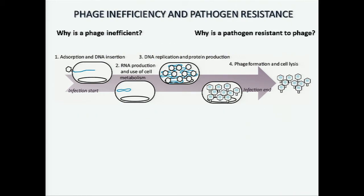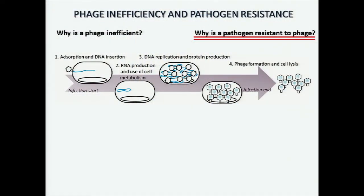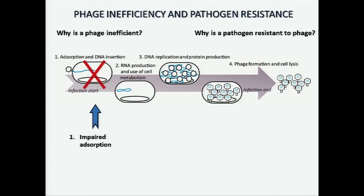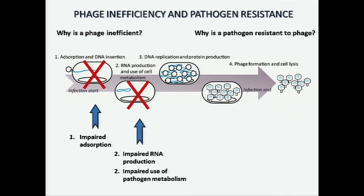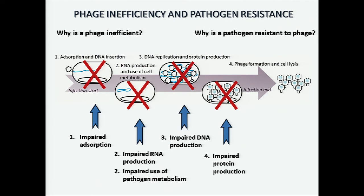In the lab, we ask two important questions: why is the phage inefficient, and why is the pathogen resistant to phage? Just as bacteria can become resistant to antibiotics — giving us superbugs — bacteria can also be resistant to phage, and we need to understand how and why so we can prevent it or find alternatives. For example, a phage could be inefficient or a pathogen could develop resistance if the phage cannot attach well (impaired adsorption), if phage DNA cannot make RNA, if the phage cannot use the pathogen's metabolism effectively, if phage DNA or proteins are not replicating well, or if the phage is unable to lyse the cell.